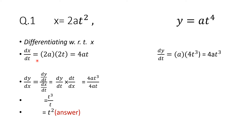We have dx by dt and dy by dt. We have to calculate dy by dx. What we will do is dy by dt divided by dx by dt. This gives dy by dt multiplied by dt by dx; ultimately dt cancels and we are left with dy by dx. So we take 4at³ in the numerator and 4at in the denominator. 4a and 4a cancel. We are left with t³ upon t, which gives t² as the answer to the first question.